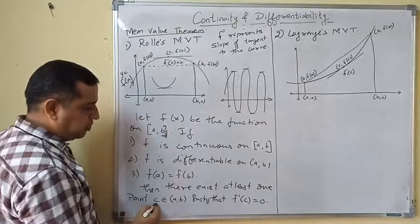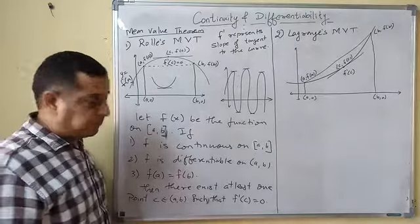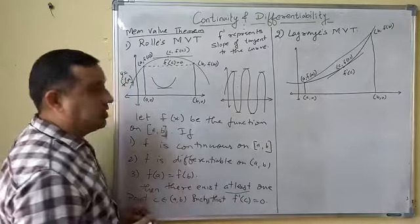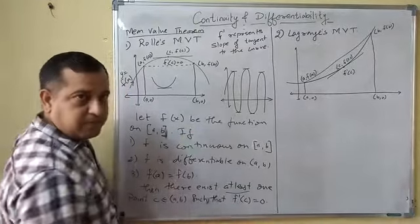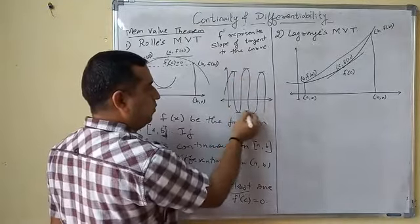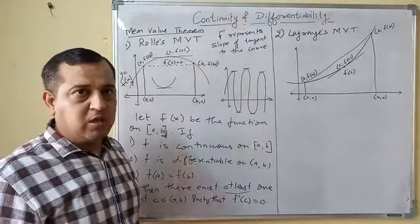Then there exists point c belonging to open interval (a,b) such that f'(c) is equal to 0. Here is at least one point. At least one point means the curve could have multiple points: 1, 2, 3, 4, 5.